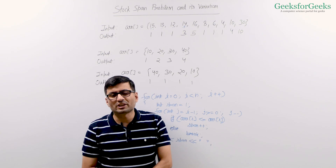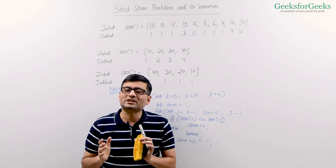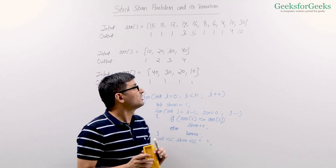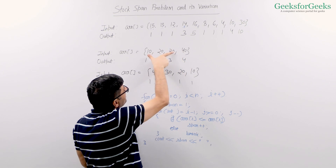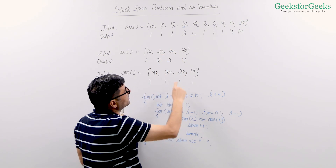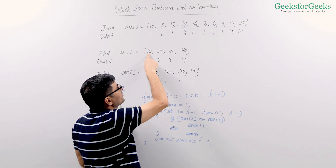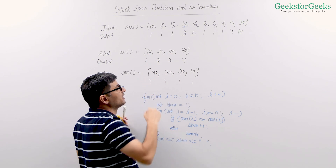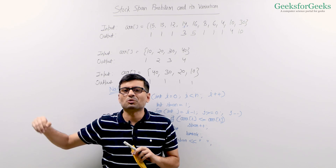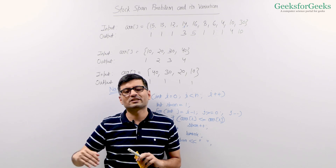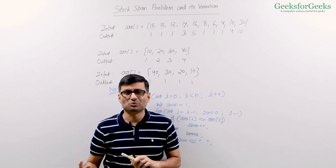What is the time complexity of it? You must have guessed it. Time complexity is O(n²). Because for this element, the inner loop will run 3 times; for this element, it will run 2 times; for this element, it's going to run 1 time. So it's going to be (n-1) + (n-2) + (n-3) up to 1, which is n*(n-1)/2, which is quadratic.